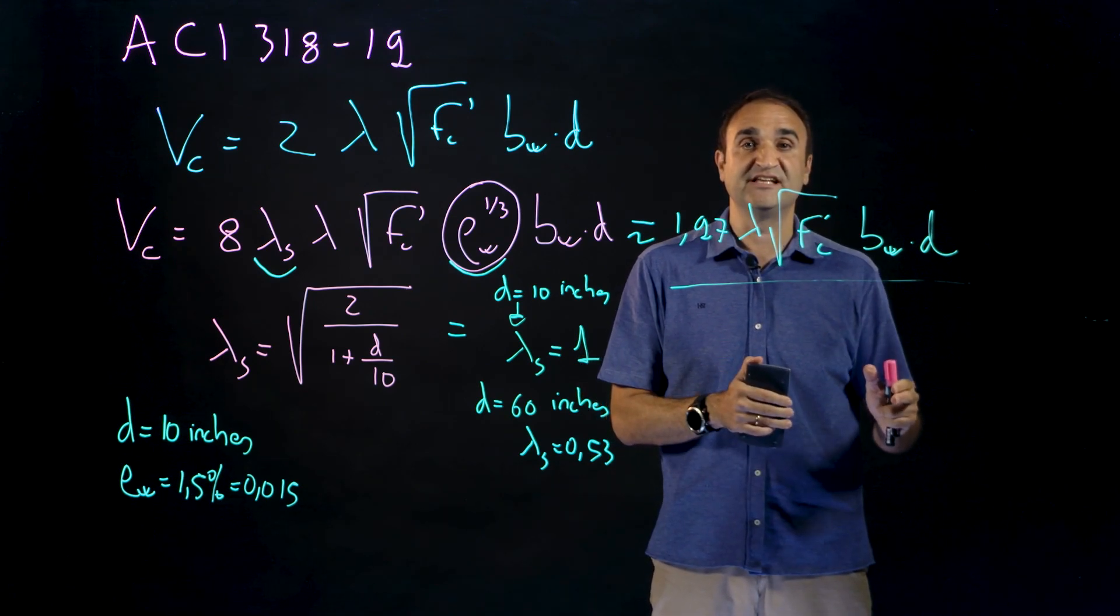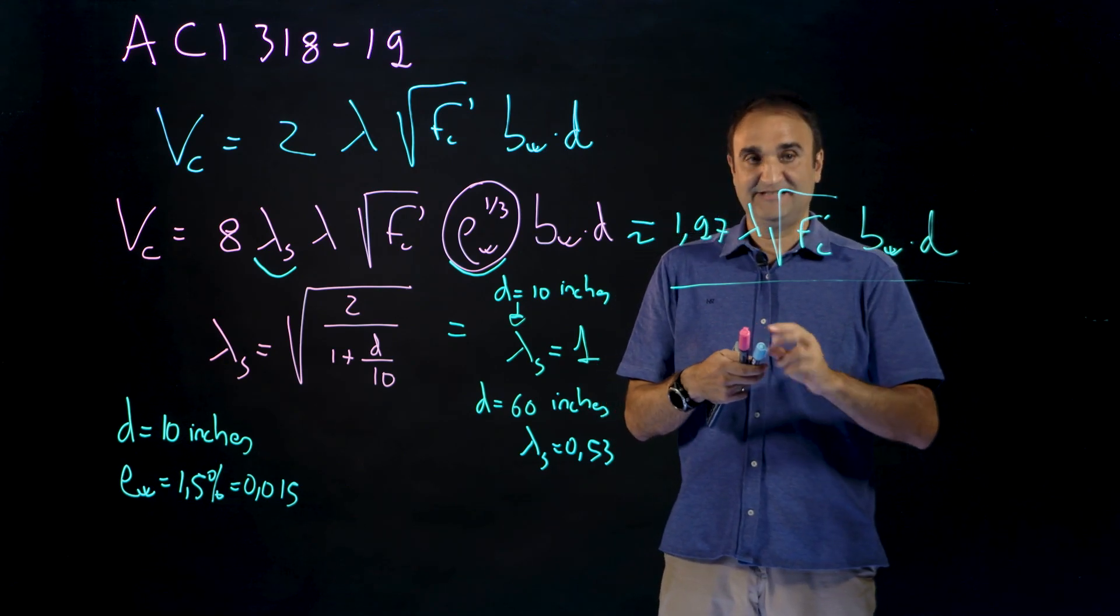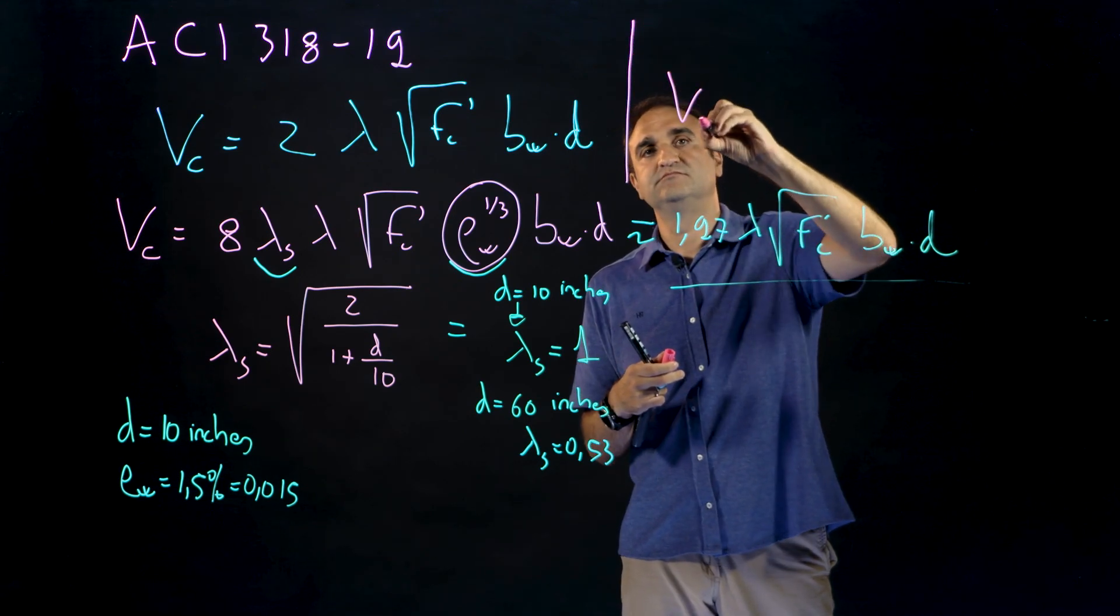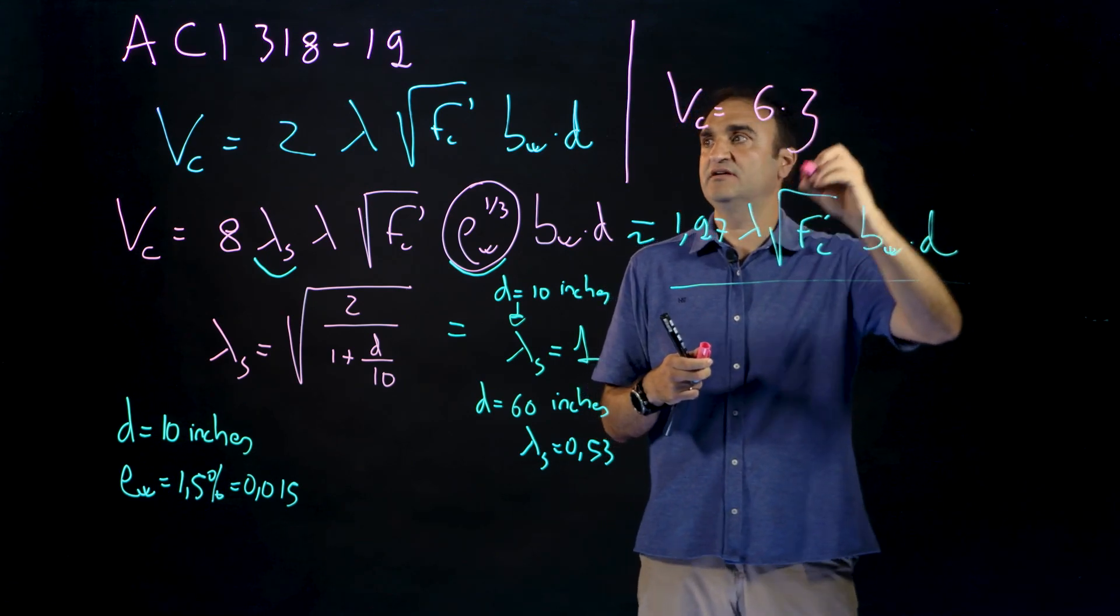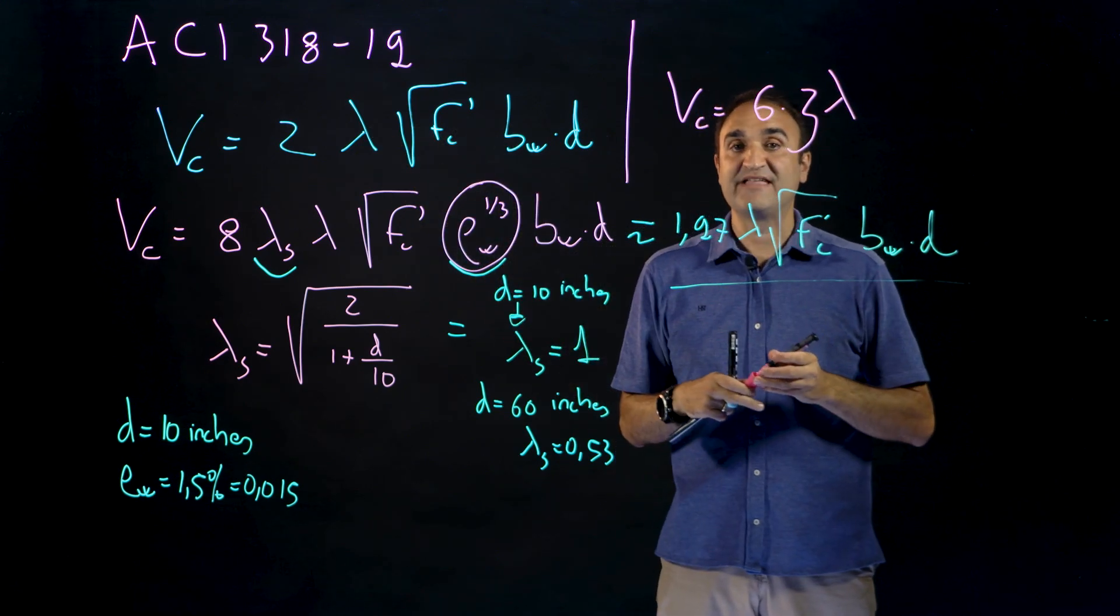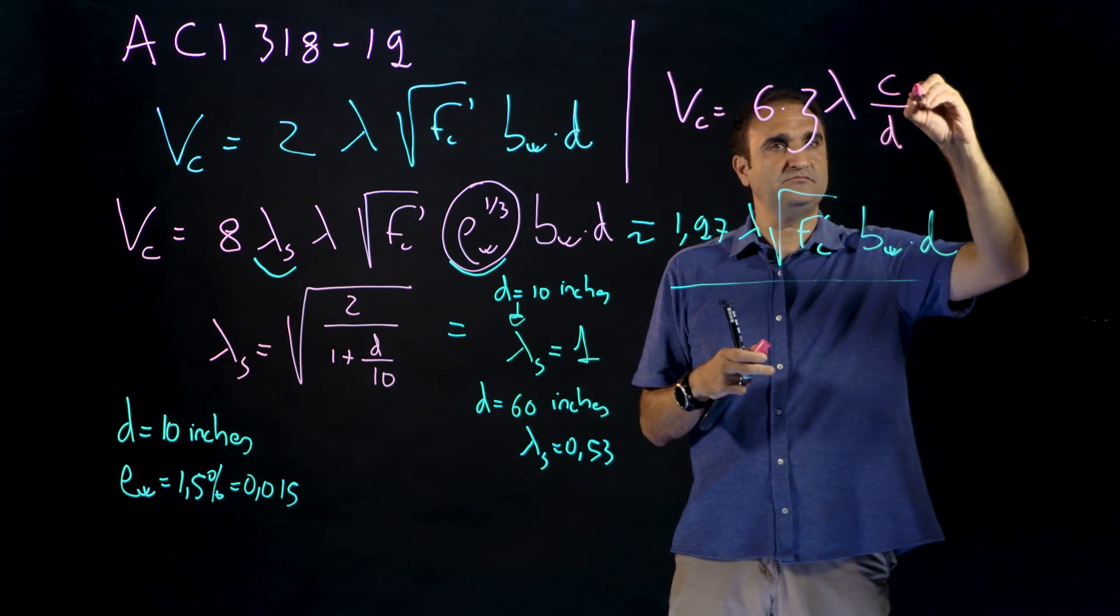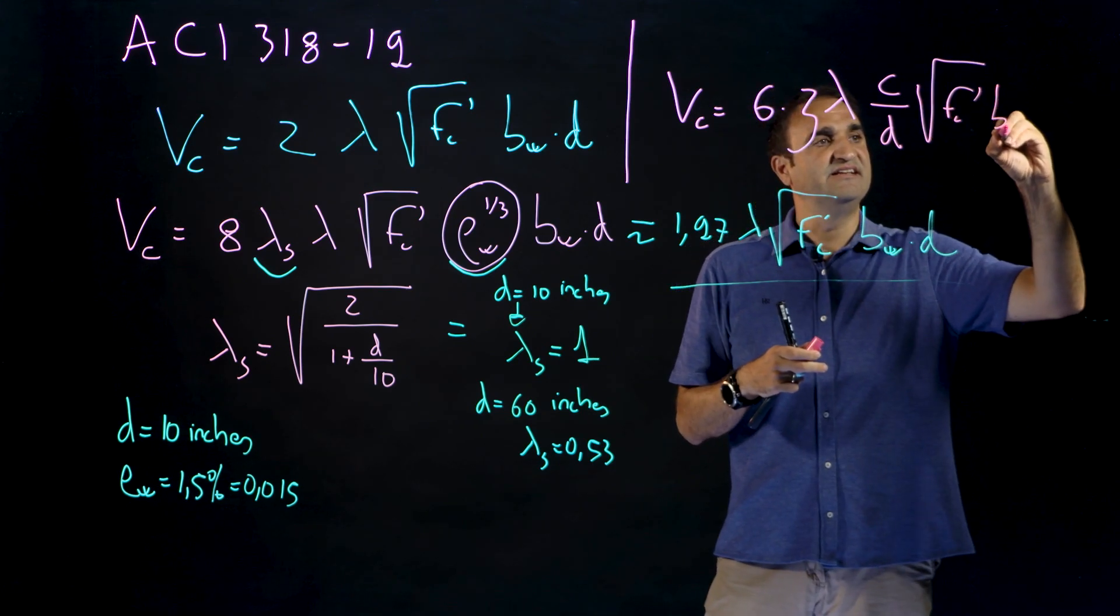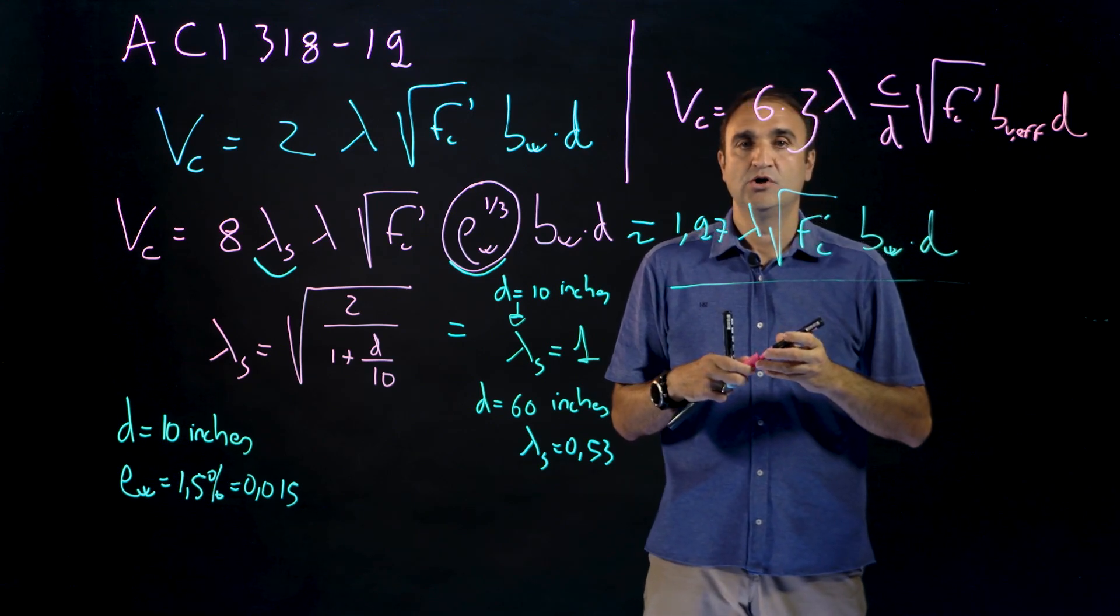And you will find the proposal published by professor Mari, myself, and other colleagues from the University of Balearic Islands and the Technical University of Catalonia. The proposal was that Vc was equal to six, a size and slenderness factor, then the same lambda for lightweight aggregate concrete, c over d, and then the root of fc prime, the effective width times d.